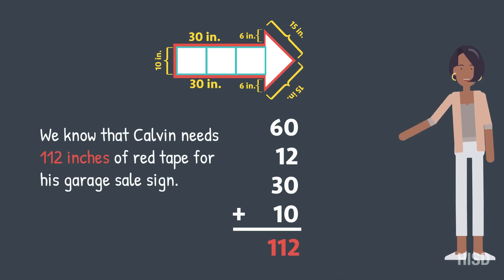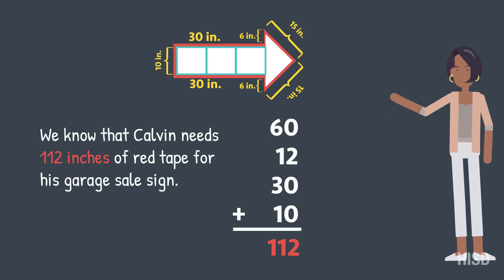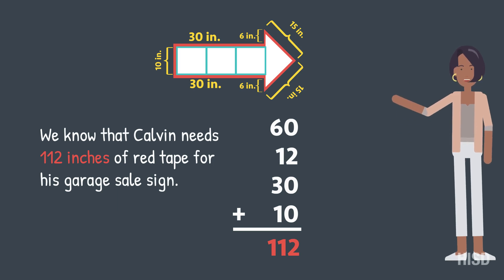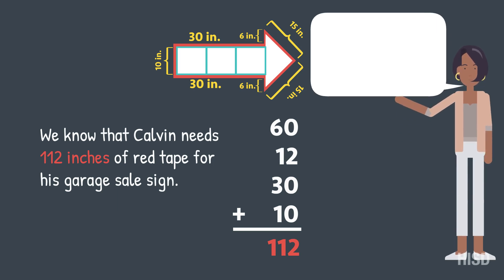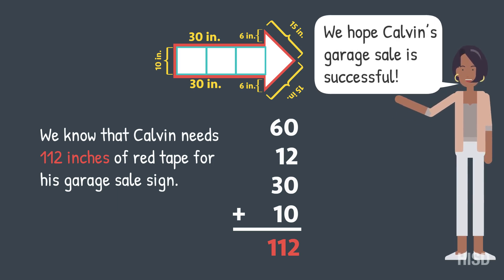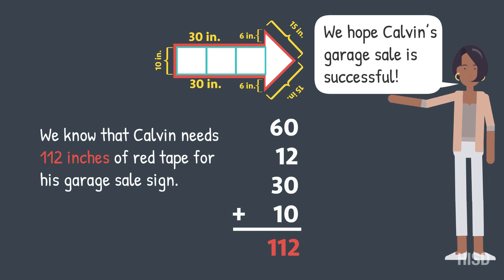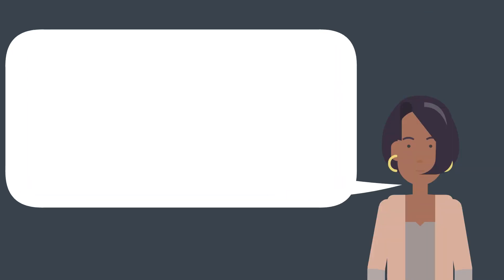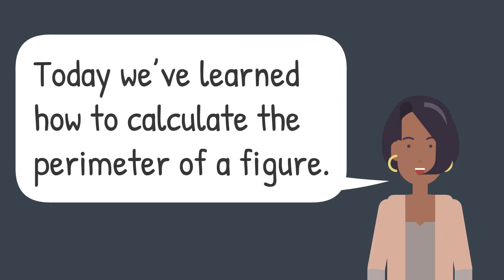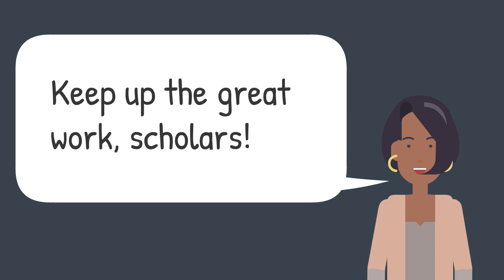We know that Calvin needs 112 inches of red tape for his garage sale sign. We hope Calvin's garage sale is successful. Today we've learned how to calculate the perimeter of a figure. Keep up the great work, scholars.